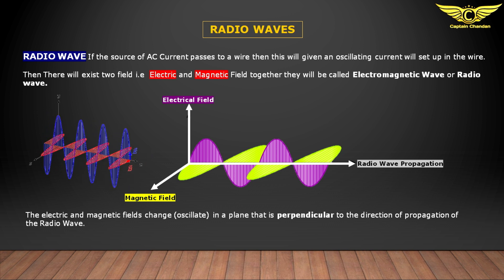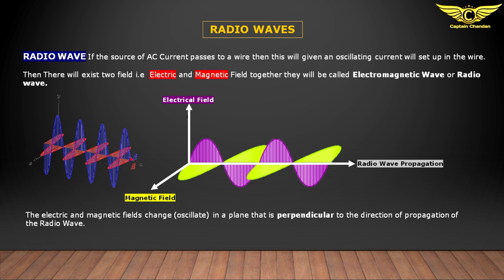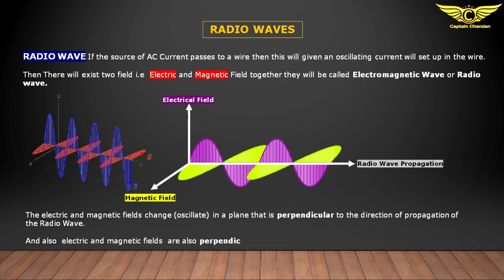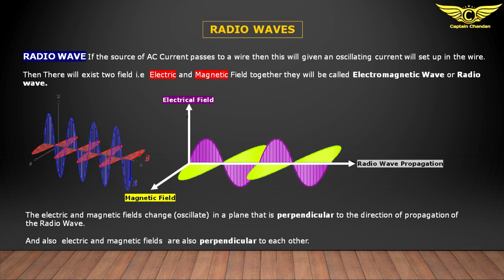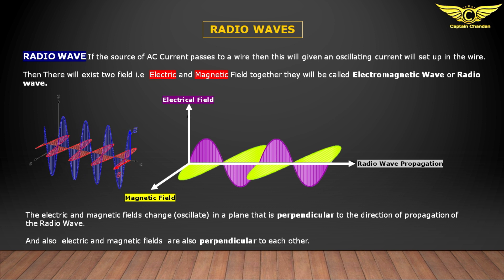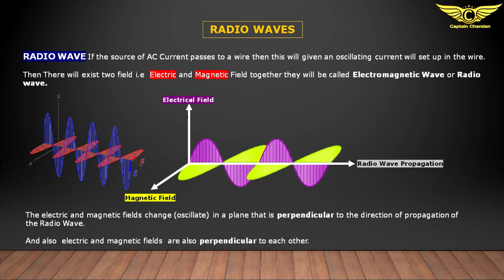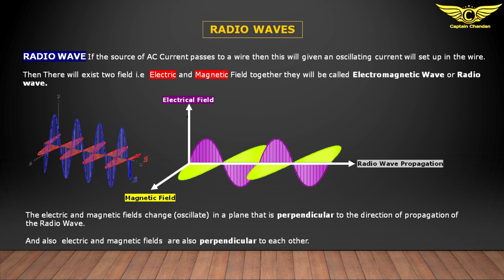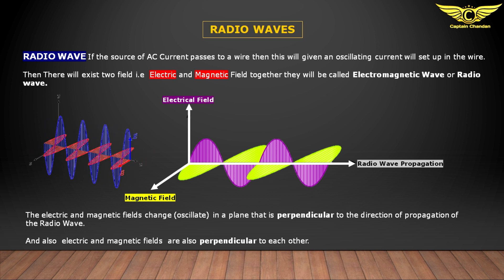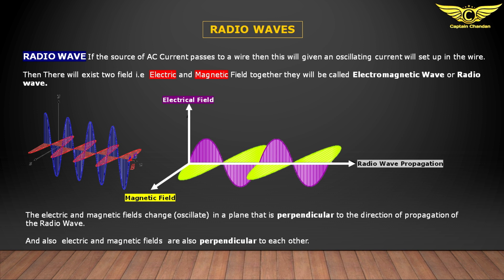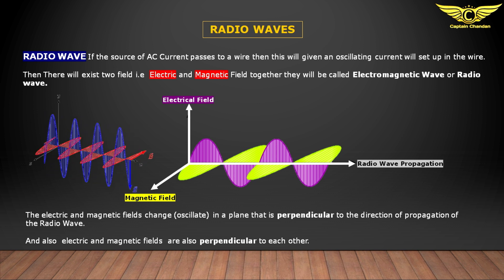The electrical and magnetic fields oscillate in a plane that is perpendicular to the direction of propagation of the radio wave, and the electric and magnetic fields are also perpendicular to each other. This means the electrical field, the magnetic field, and the radio wave propagation are all perpendicular to each other. Radio wave propagation means the radio wave travels from one point to another.